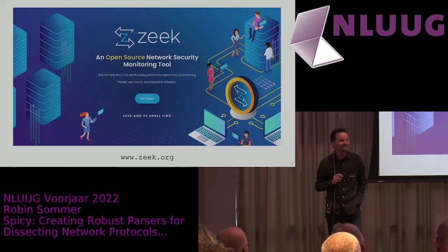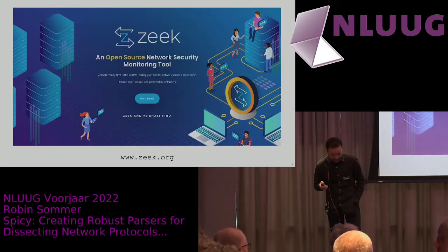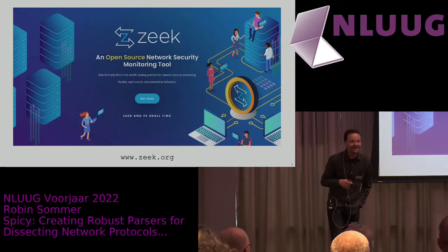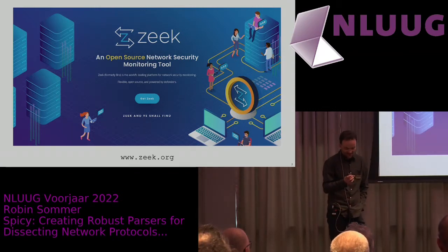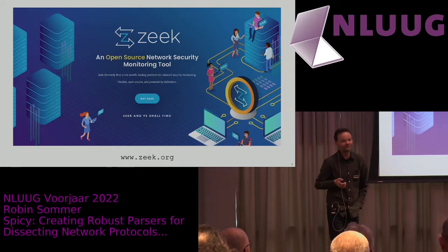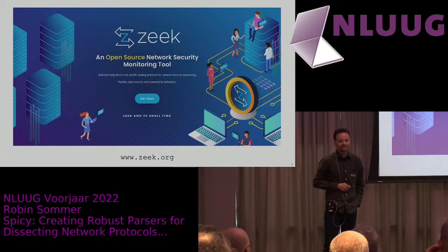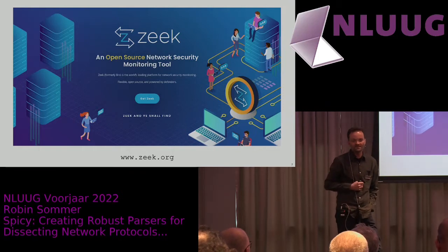Let me ask who knows Zeek, formerly Bro for those who have been around for a while. Two hands. So it's an open source network security monitor. The first line of code has been written by Byron in 1995, so this has been around quite a while. However, it has gained more traction more recently, and that is interesting because it takes a bit of a different approach compared to other systems in that space. You might know Snort or Suricata — same space, but different approach. They look mostly for patterns in network streams and give you an alert once they find something. Zeek is essentially a platform for doing programming and analysis tasks.